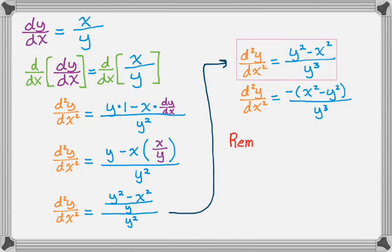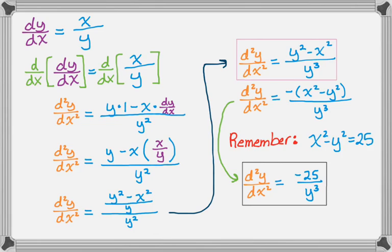I'm going to remember that originally I said that x squared minus y squared was 25. And then finally, I'm going to rewrite this to be the second derivative is negative 25 over y cubed.